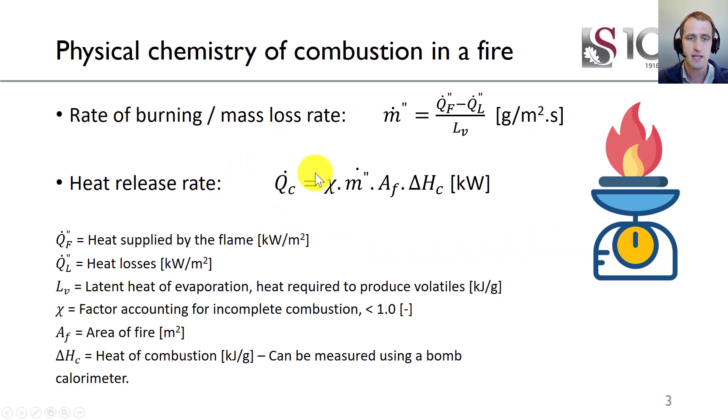Our total heat release rate is some factor accounting for incomplete combustion—let's say 0.9, 0.95, or 0.8 depending on the material. We know our calorific value from a bomb calorimeter, the area of fire, and our mass loss rate. So from a mass loss, we can get to a heat release rate for a heptane fire or polyurethane or something as a single material.